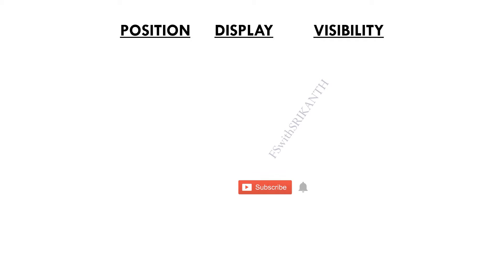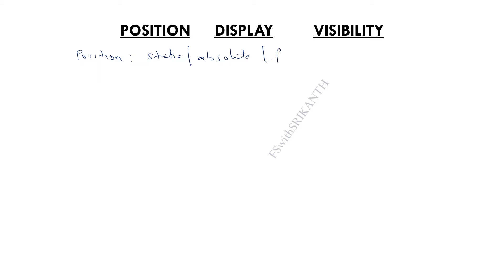These three properties are the most important properties. The first one is position. In CSS, we have a property called position that specifies where the element should appear in the web page. The position property has five important values: static, absolute, fixed, relative, and sticky.